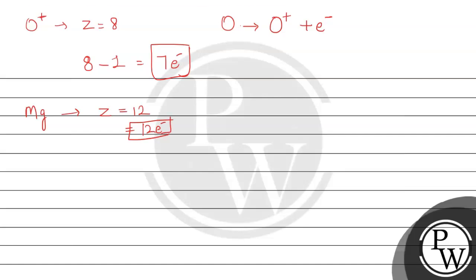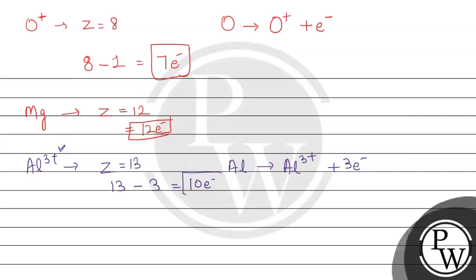The next species is aluminium 3 positive (Al³⁺). For aluminium the atomic number is 13. The 3 positive charge indicates that 3 electrons have been removed. In neutral aluminium there should be 13 electrons; we subtract 3 electrons, so Al³⁺ will have 10 electrons.